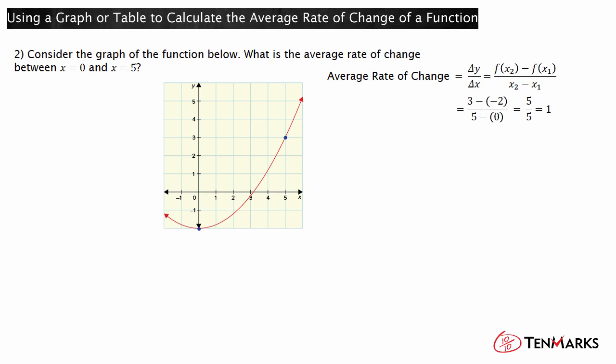There is also another way to calculate the average rate of change from a graph. Count the units between y equals negative 2 and y equals 3. There are 5 units. Similarly, there are 5 units between x equals 0 and x equals 5. Therefore, the average rate of change is 5 divided by 5, which is 1.